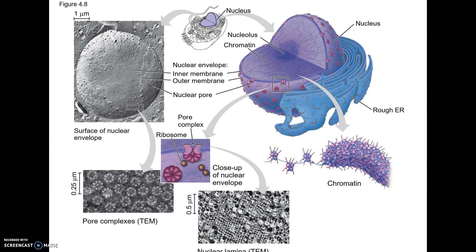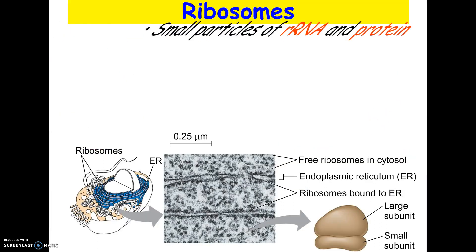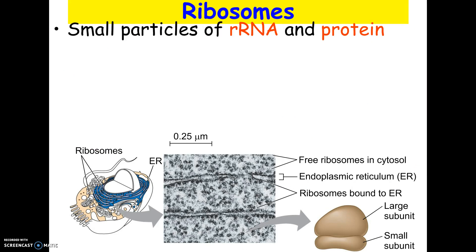Here's a picture of a nucleus under a scanning electron microscope — notice that 3D image looks almost like the moon. At the bottom left you can see the pores under a transmission electron microscope. You'll also notice in another picture how the nucleus double membrane is actually connected to the rough endoplasmic reticulum, which we'll talk about in a moment.